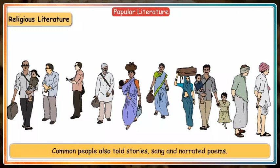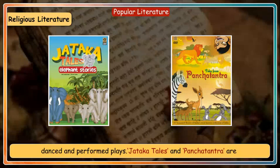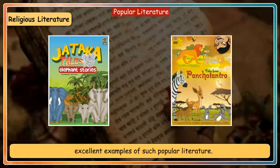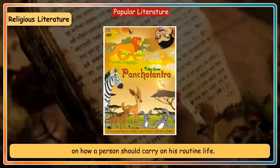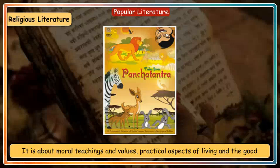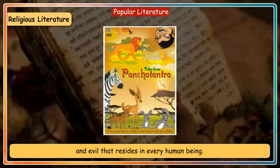Common people also told stories, sang and narrated poems, danced and performed plays. Jataka tales and Panchatantra are excellent examples of such popular literature. The Panchatantra is a book on how a person should carry on his routine life, about moral teachings and values, practical aspects of living, and the good and evil that reside in every human being.